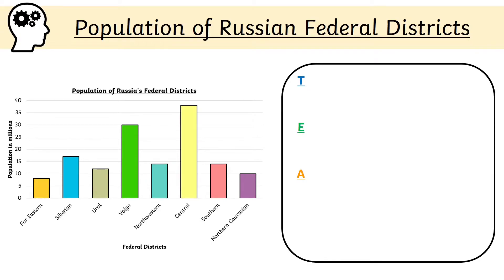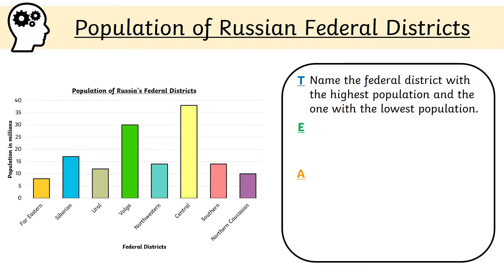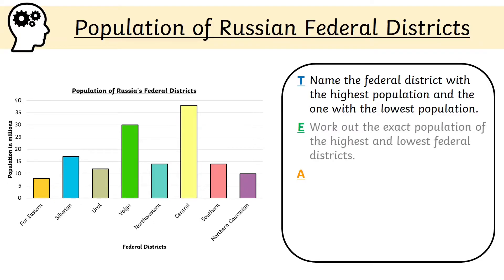The trend of this graph can be described by naming the district with the highest and lowest population. To do this, you look for the highest and lowest bar on the bar graph and find the name of the district. Example refers to the use of data from the graph — we state what the highest and lowest districts are and then use the y-axis to give the exact population in millions.